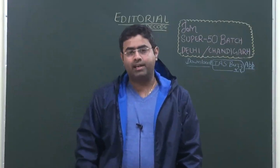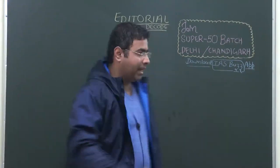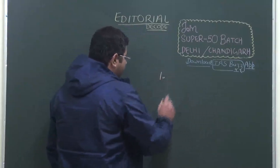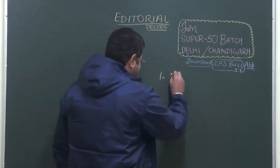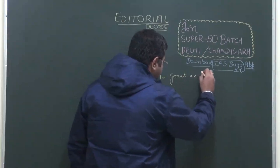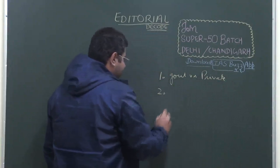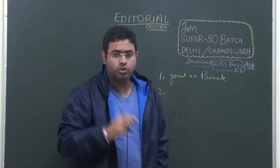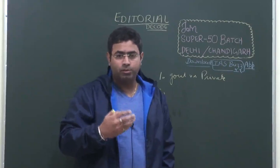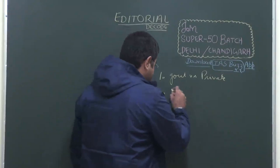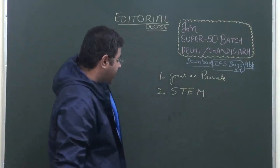Broadly, this year's Economic Survey has three things in focus. The first is the overall investment in science and technology — government sector versus private sector. Secondly, the Economic Survey has dealt with the total number of patents, total number of publications, and developments in the domain of STEM — Science, Technology, Engineering, and Mathematics.